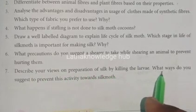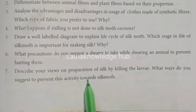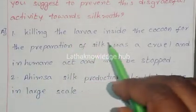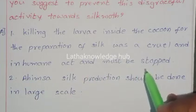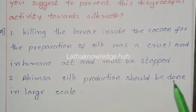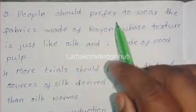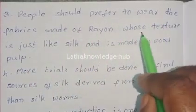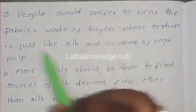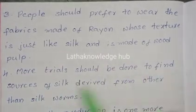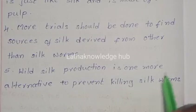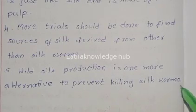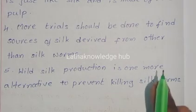Describe your views on preparation of silk by killing the larva, and suggest ways to prevent this activity. Killing the larva inside the cocoon for the preparation of silk is a cruel and inhuman act and must be stopped. Ahimsa silk production should be done on a large scale. People should prefer to wear fabrics made of rayon, whose texture is just like silk and is made of wood pulp. More research should be done to find sources of silk other than silkworms. Wild silk production is one more alternative to prevent killing silkworms.